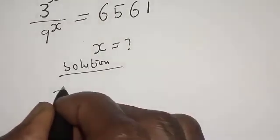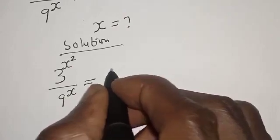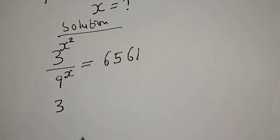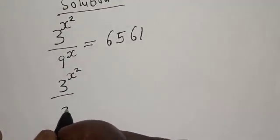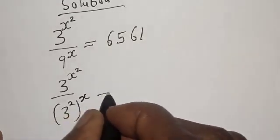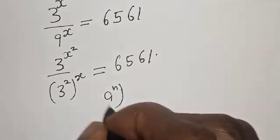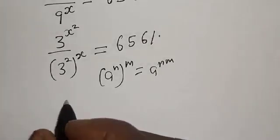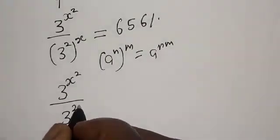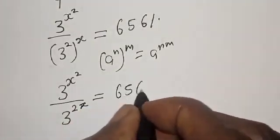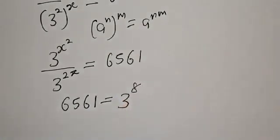We have the given equation: 3 raised to power S squared over 9 raised to power S is equal to 6561. Now, 9 raised to power S is the same thing as 3 squared raised to power S. Remember that 6561 is equal to 3 raised to power 8. So we have 3 raised to power S squared over 3 raised to power 2S is equal to 3 raised to power 8.